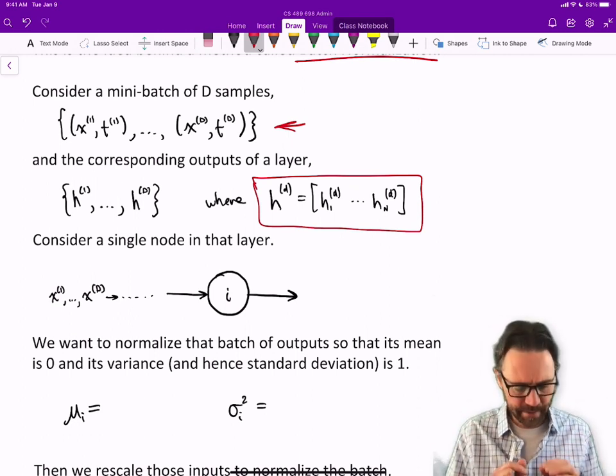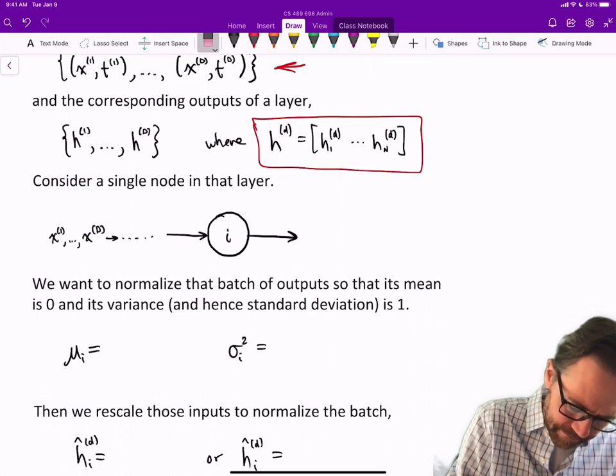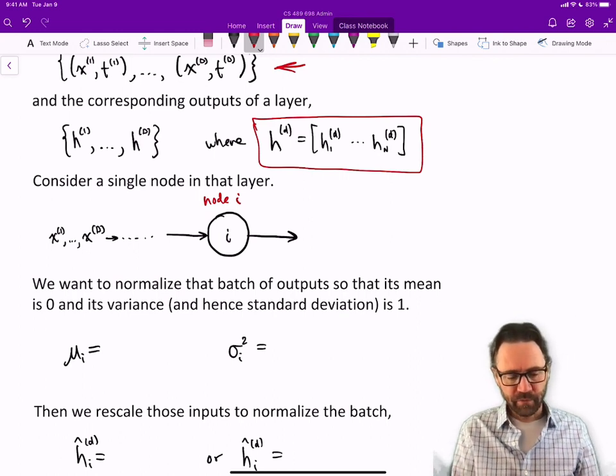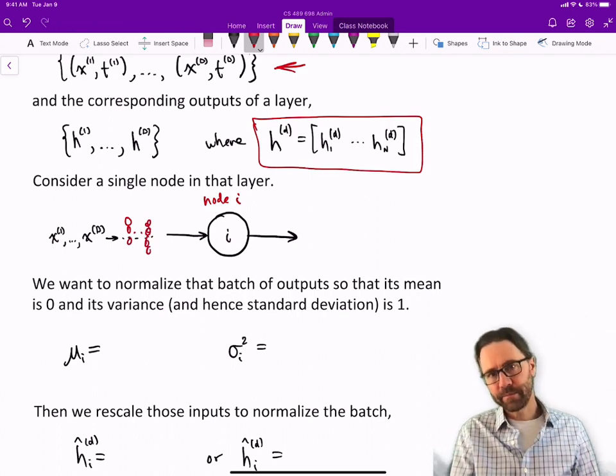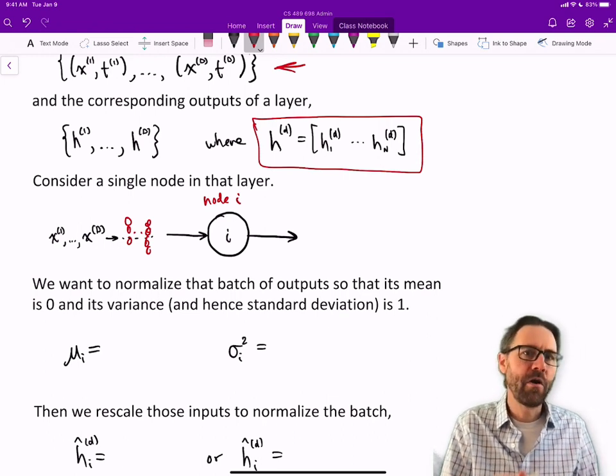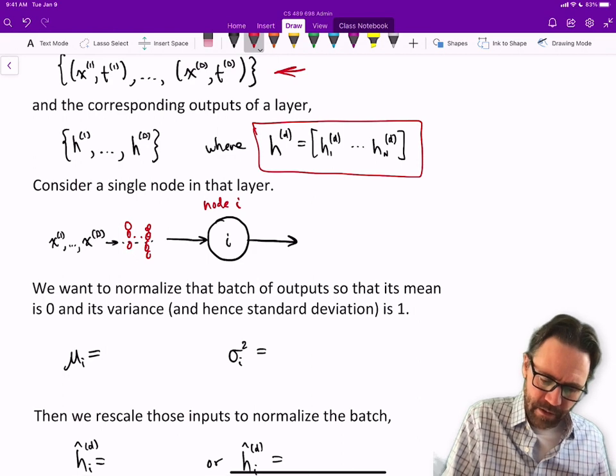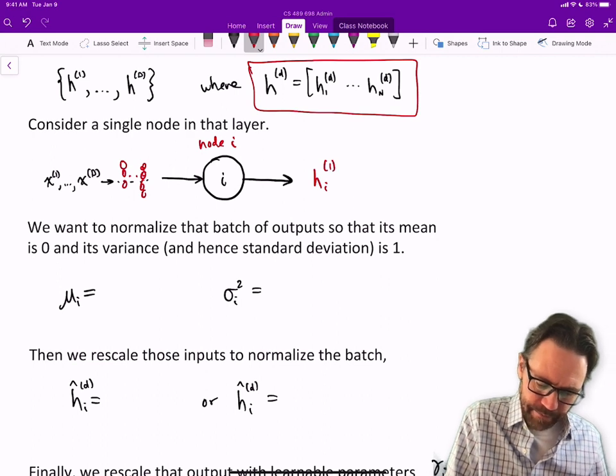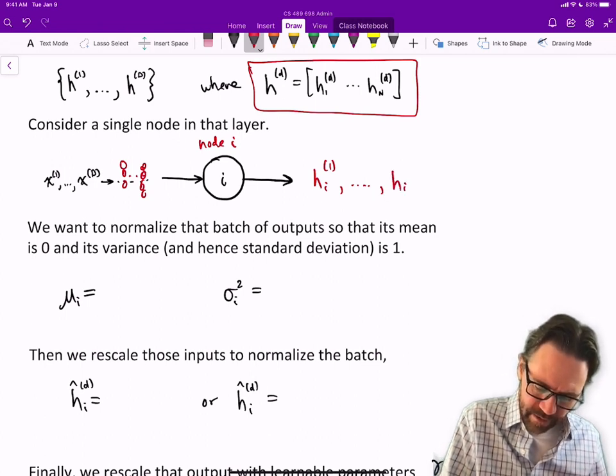We're going to focus on a single hidden node, let's call it node i. We feed all of our inputs in—it goes through maybe multiple layers—but eventually comes to this hidden node. For x1 as input we get hi1, for the second input we get a different activity, for the third input a different activity, and finally for the dth input we get the dth activity.